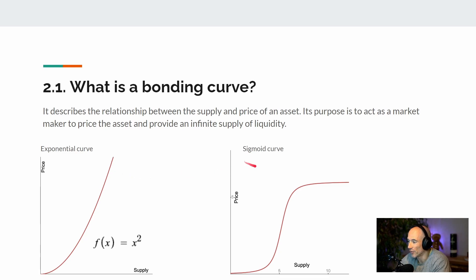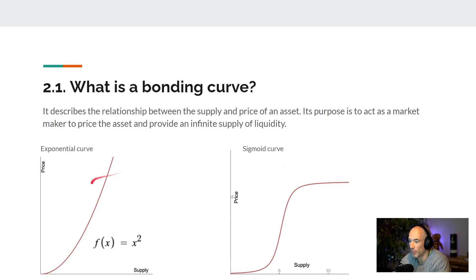On the other hand, on the sigmoid curve, the curve slowly rises and at a certain point of supply it grows exponentially in price. This continues until we reach a certain amount of supply and the curve stabilizes — it smooths out. This means there is still some reward for early adopters, but it does not punish latecomers as much as the exponential curve does.